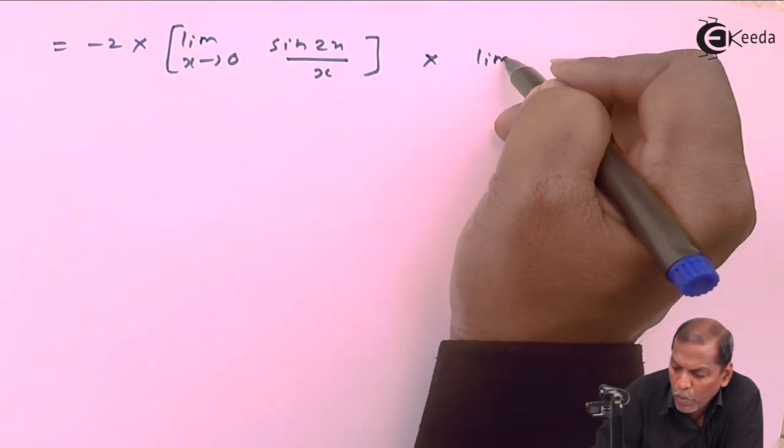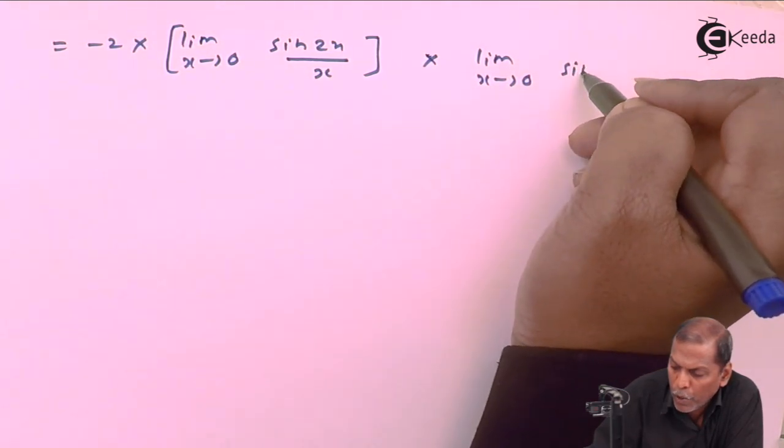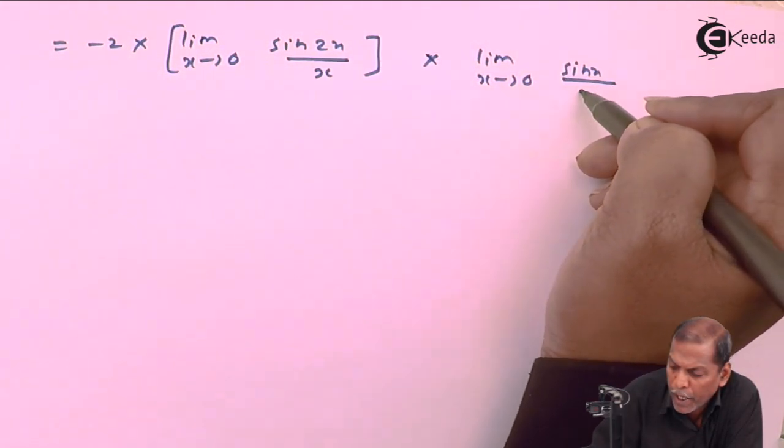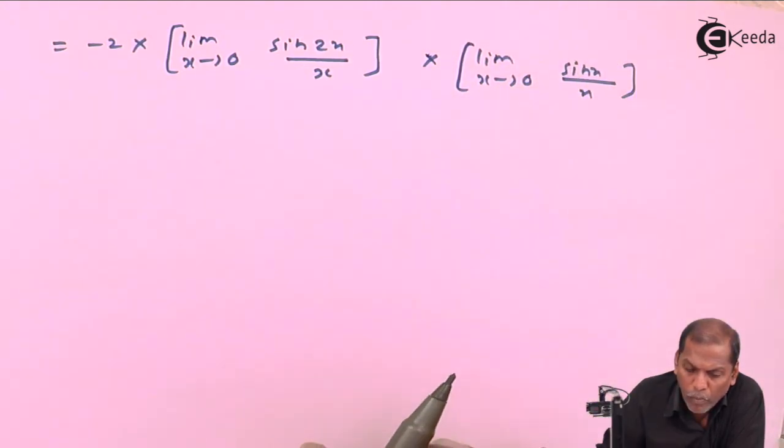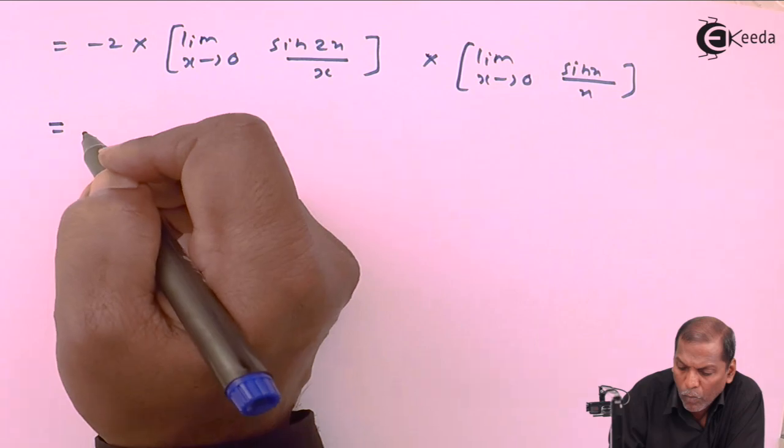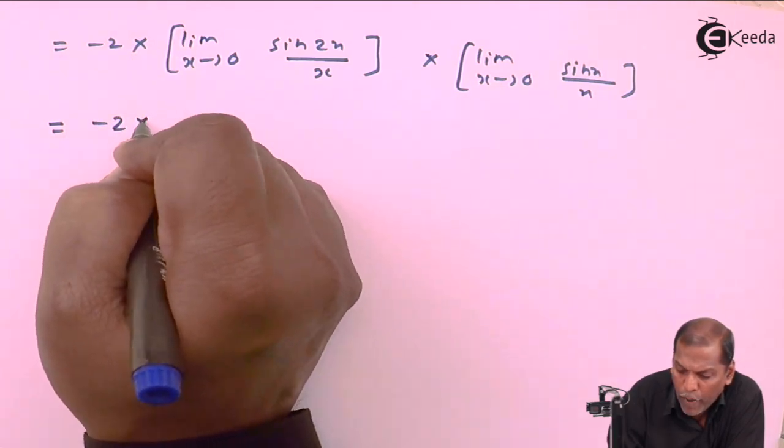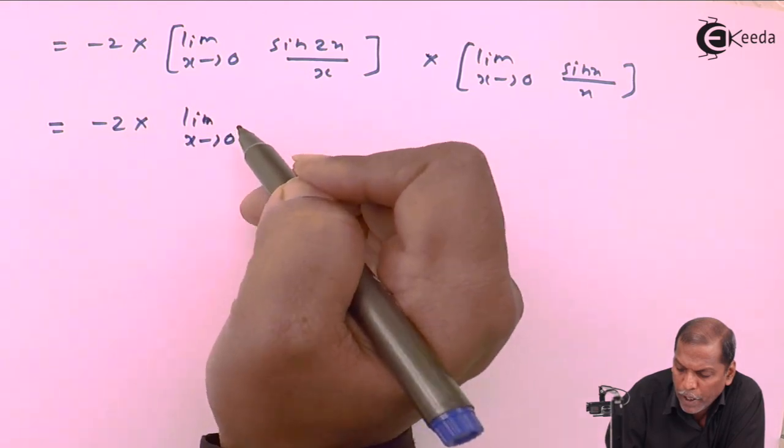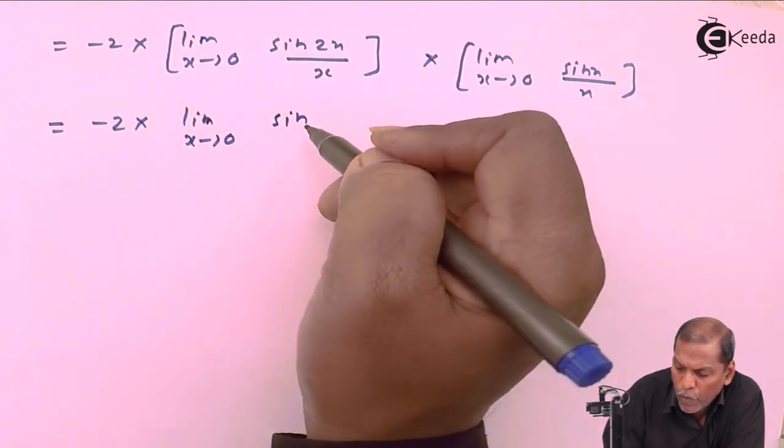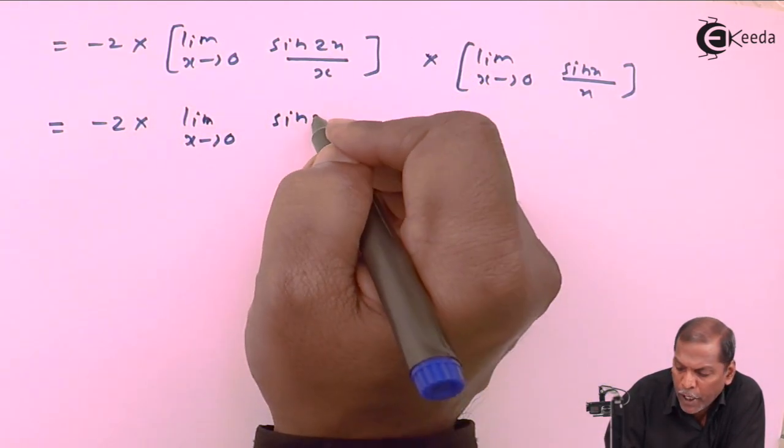So that equals minus 2 into limit x tends to zero, sin x upon x. So that equals minus 2 into limit x tends to 0